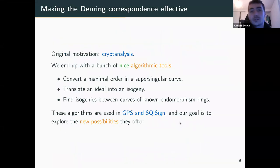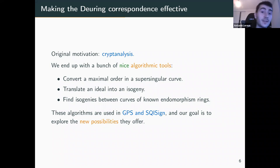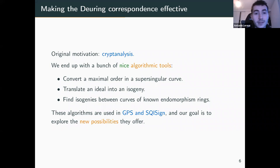The original goal of the study of the Deuring correspondence was actually cryptanalysis. We wanted to understand a little bit better the isogeny problem and how it could relate to some problems over the quaternion algebra. We did not end up breaking those problems, but we got a bunch of nice algorithmic tools that allowed conversion from elements over the quaternion algebra side toward elliptic curves and isogenies. This has already been used constructively for signatures — first the GPS signatures and more recently SQISign.